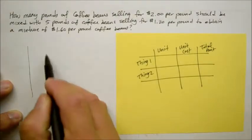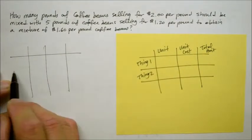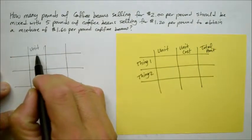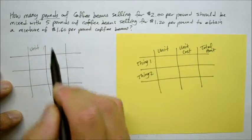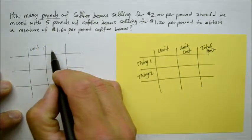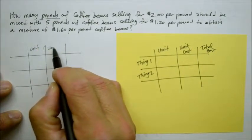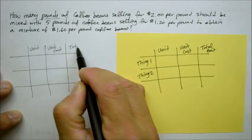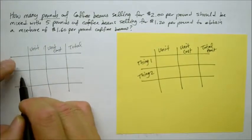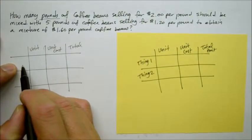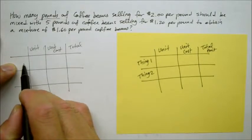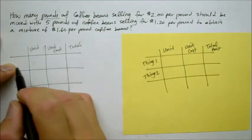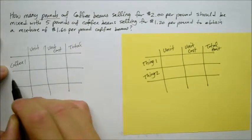We're going to go one, two, three. One, two, three. Here's the unit, how many units? In this case, how many pounds? Here, how much per pound? So it's a unit cost. And multiply them, you get a total cost, total amount. And here is thing one. In this case, it's the cheaper one. Coffee beans sells it for $2, coffee one.